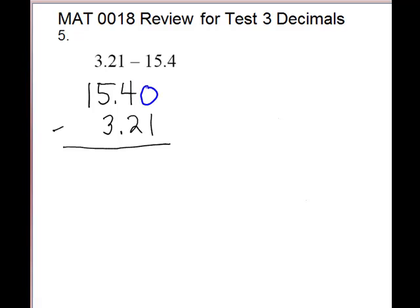When you have subtraction, you have to fill in any missing spots with zeros. So we have to fill this in. Then we're ready to subtract. So we're going to have to borrow. We'll have 10 minus 1 is 9. 3 minus 2 is 1. Decimal goes straight down. 5 minus 3 is 2. And 1 minus nothing is 1. And we have to deal with our sign. So sign of the larger. The larger was the 15. It was negative. So we're going to have a negative.